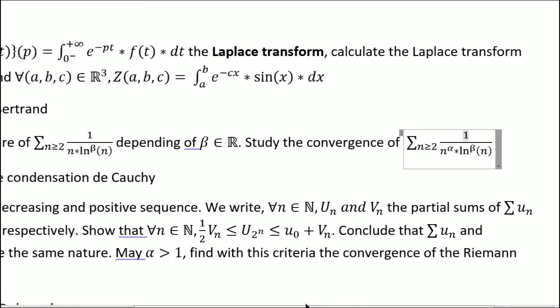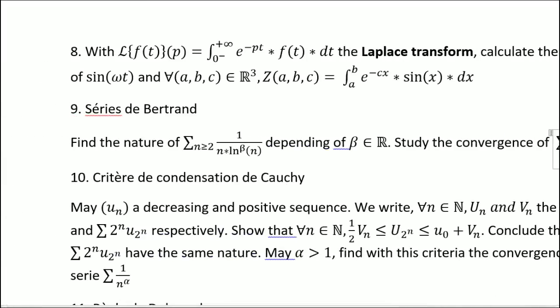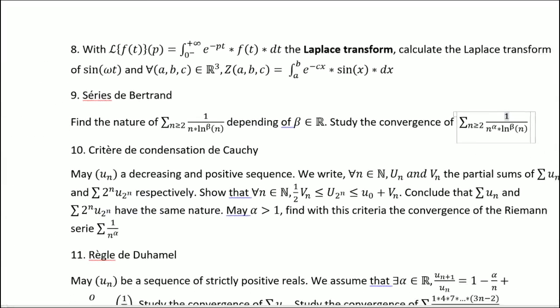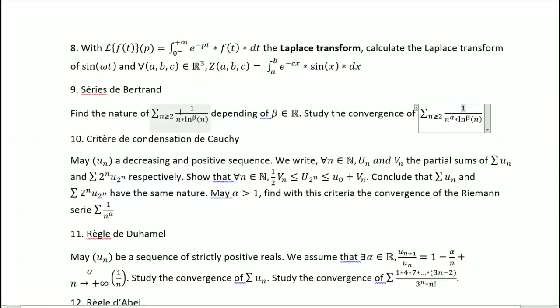So at first we'll look at the case where beta equals 1, where alpha equals 1, and then we'll generalize for different values of alpha. So let's see that.